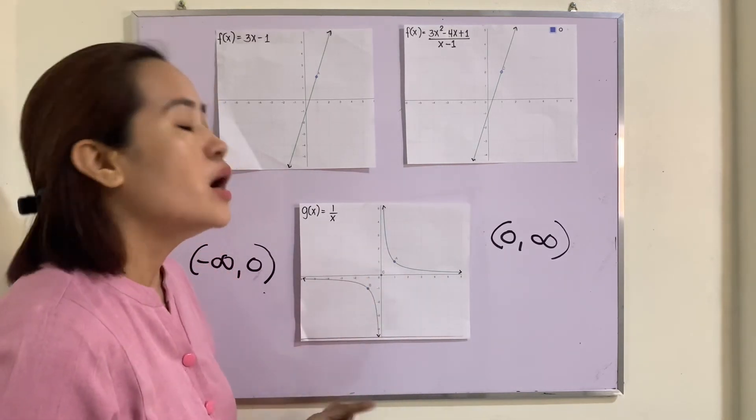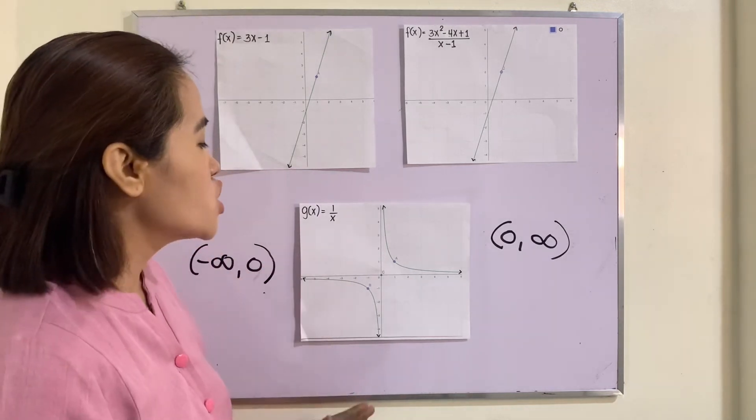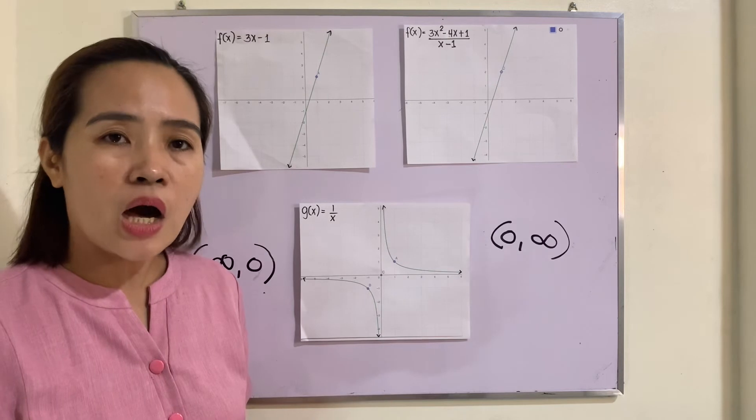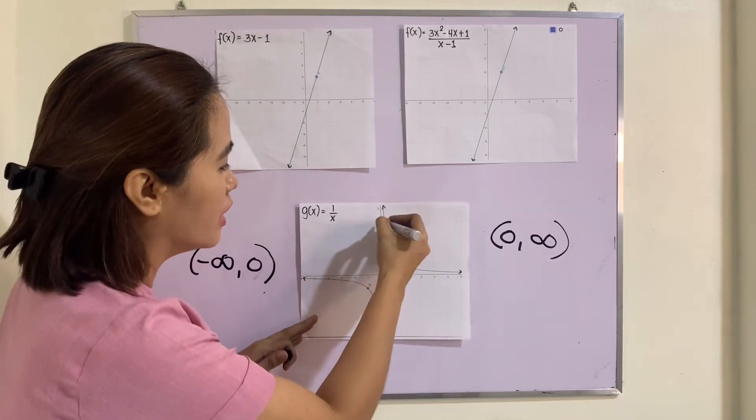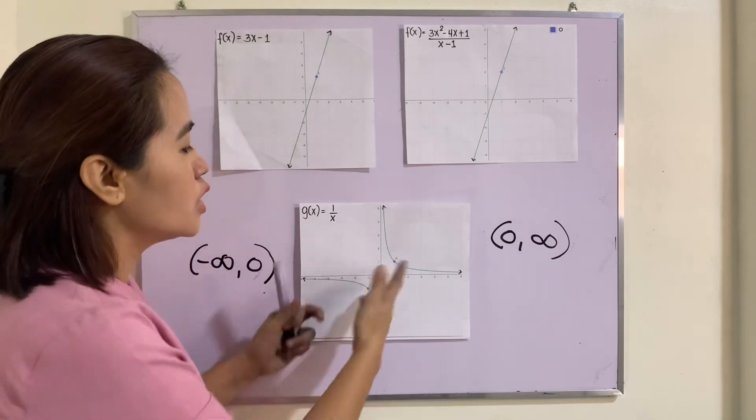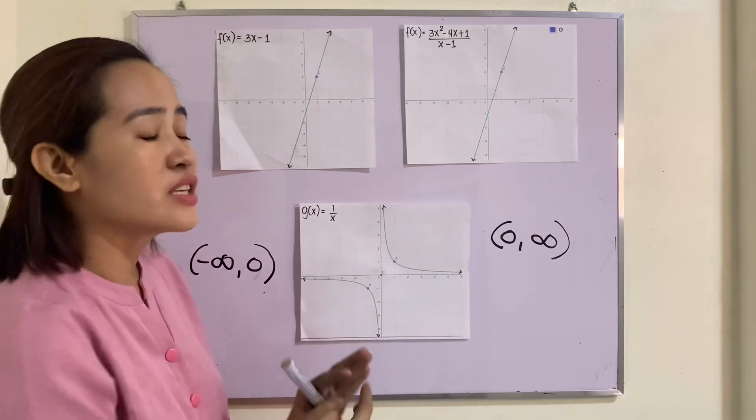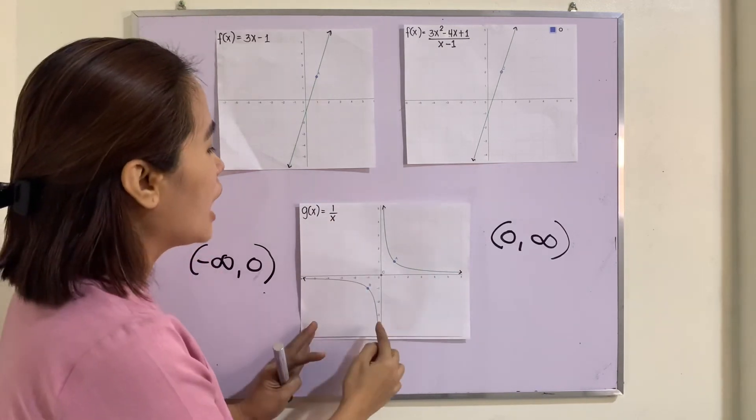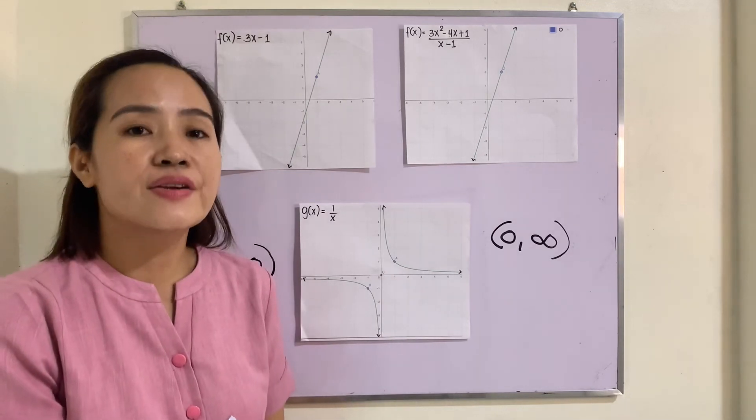What if at x = 0? Is the function continuous at x = 0? Therefore the answer there is no. The function is not continuous at x = 0 because as you can see that is undefined. At the same time, the two curves here do not intersect at x = 0.